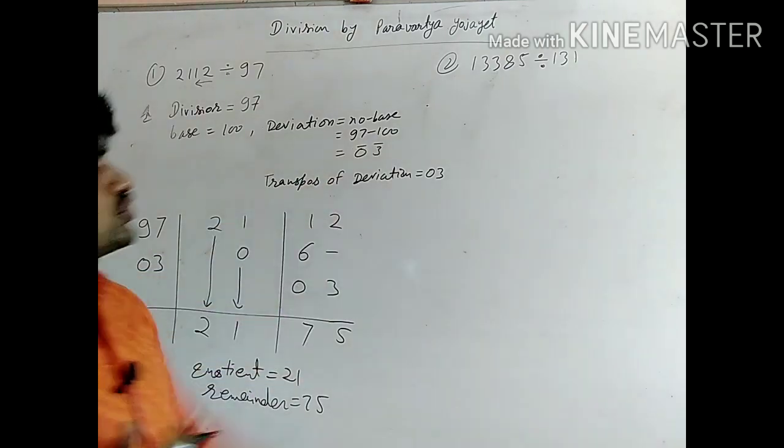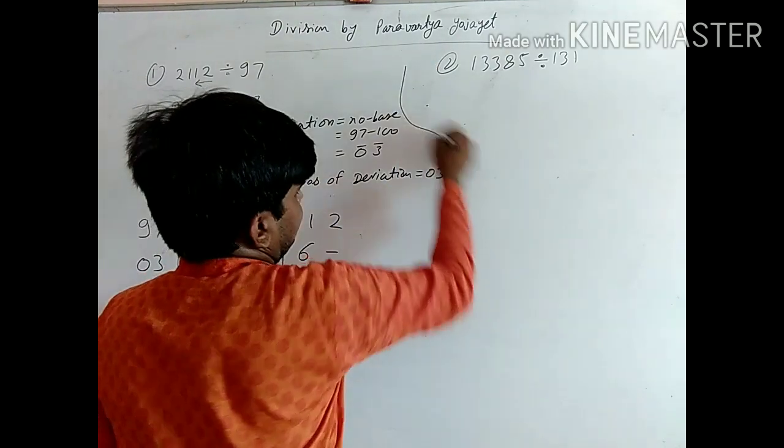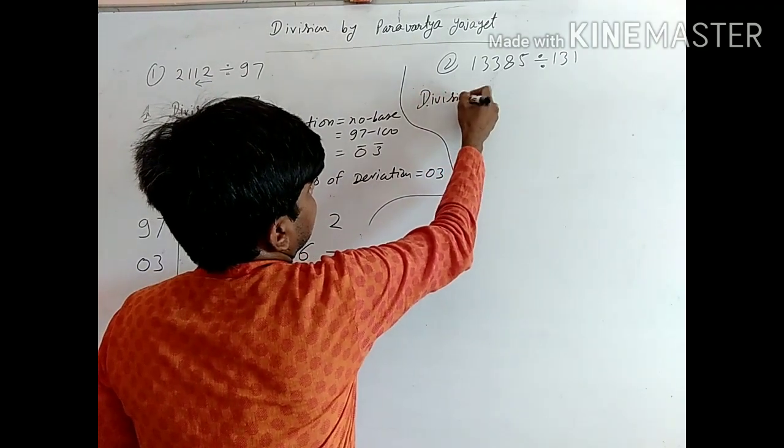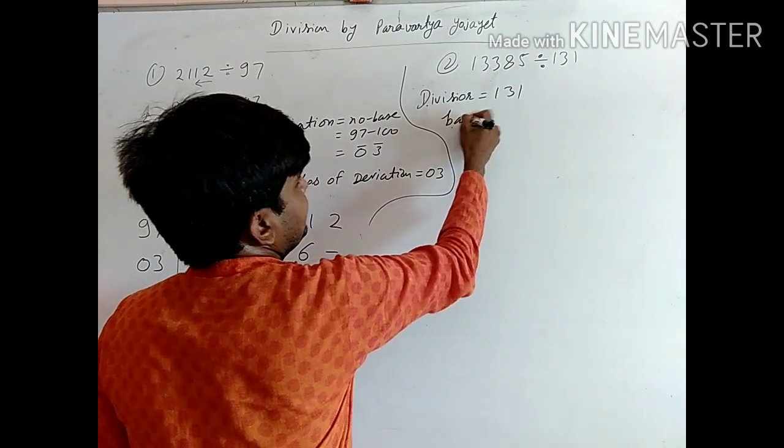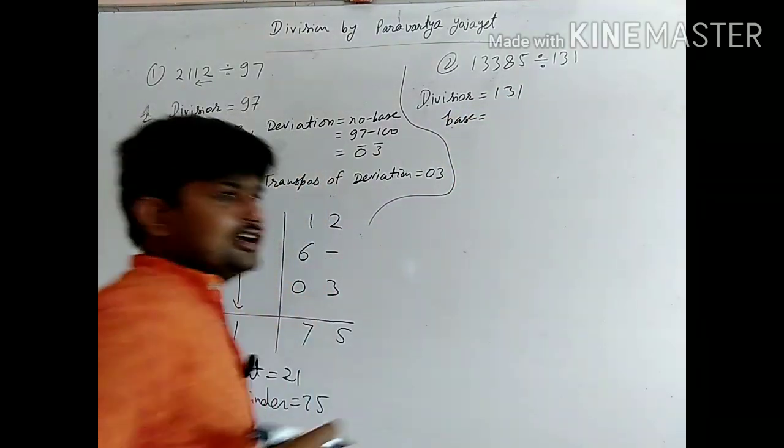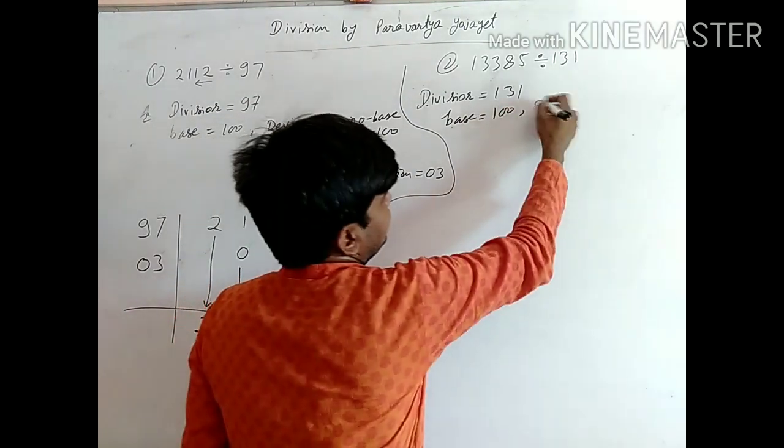Now come to next question, question number second. Here division is 131. So base that is nearer to 100. So base is 100. Now deviation.